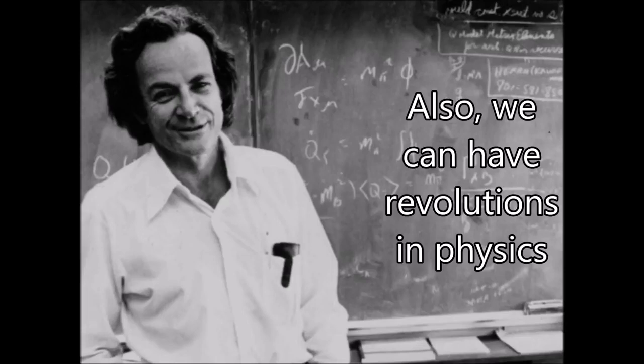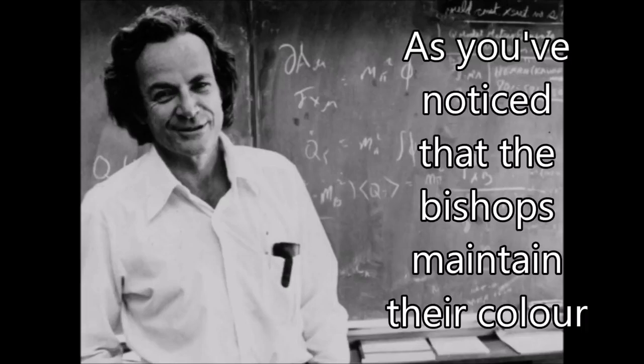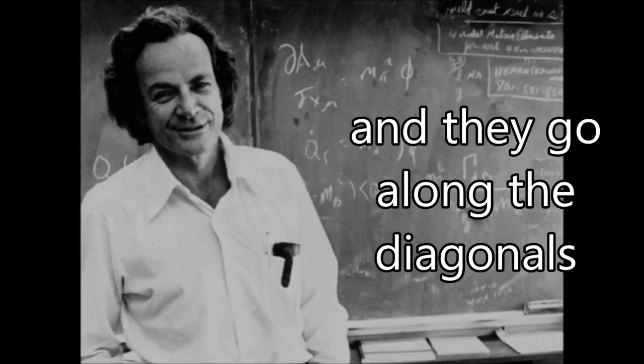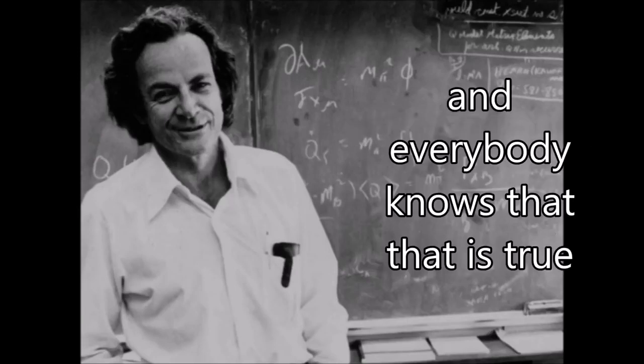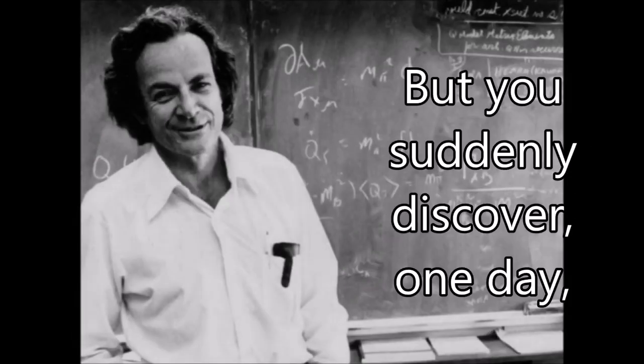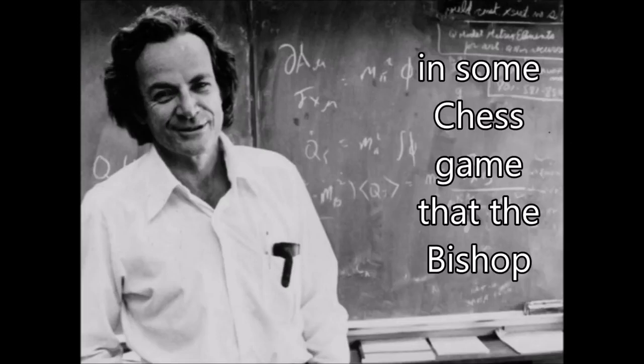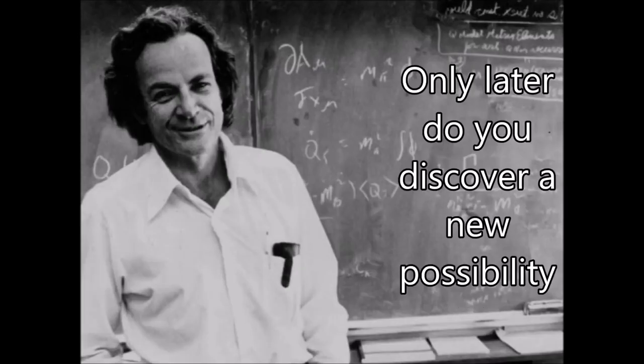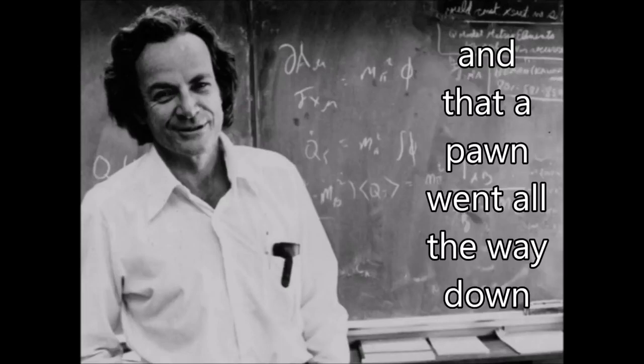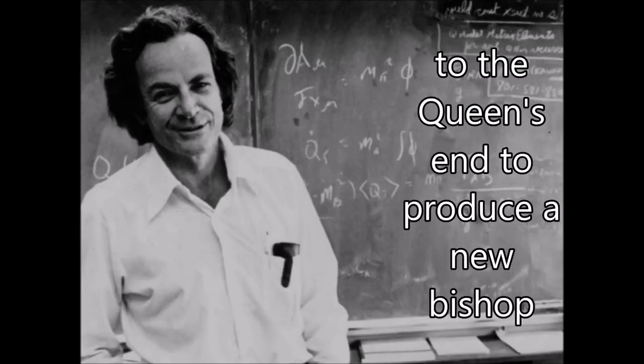Also, we could have revolutions in physics. After you've noticed that the bishops maintain their color and they go along the diagonals for such a long time, and everybody knows that's true, then you suddenly discover one day that the bishop doesn't maintain its color, it changes its color. Only later do you discover the new possibility that the bishop is captured and that a pawn went all the way down to the queen's end to produce a new bishop.